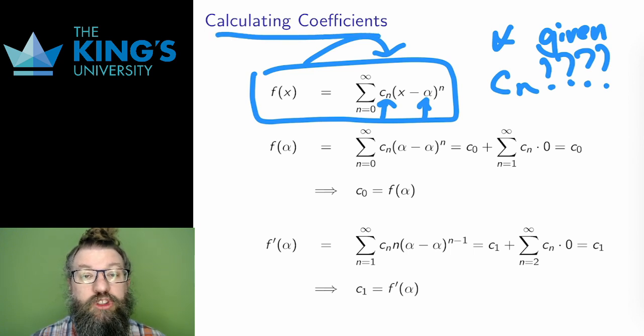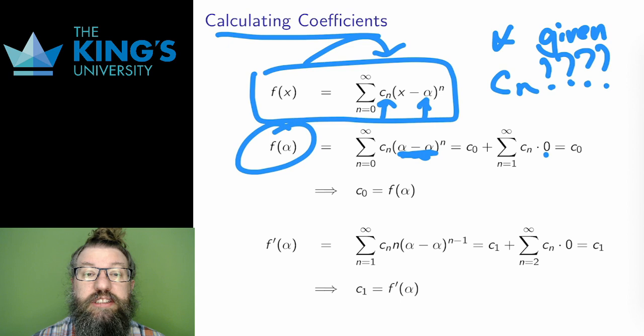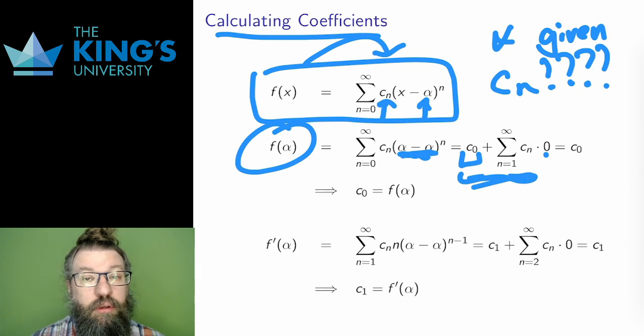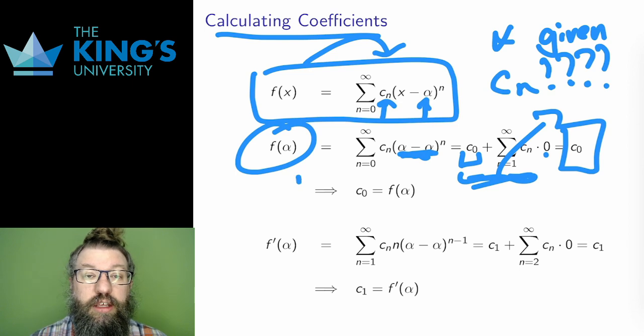I'm going to have to work one by one, starting with a constant coefficient c0. And this one is not too difficult. Look at what happens when I evaluate the series at the center point alpha. All of the powers are now powers of alpha minus alpha, which is just powers of zero. And the only term which doesn't have this zero is the constant term. And since everything else is zero, c0 is all that is left after evaluated. The first coefficient is exactly the function evaluated at the center point.